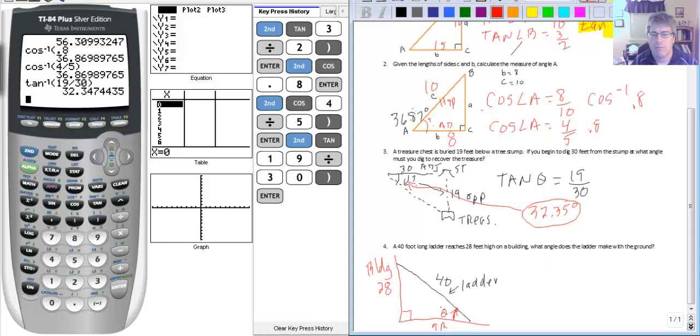So from theta I have an opposite and a hypotenuse. My reference angle here. So I have opposite and hypotenuse. So that's sine.